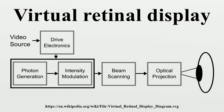A block diagram of the VRD is shown in the figure above. To create an image with the VRD a photon source is used to generate a coherent beam of light. The use of a coherent source allows the system to draw a diffraction-limited spot on the retina. The light beam is intensity modulated to match the intensity of the image being rendered. The modulation can be accomplished after the beam is generated, or if the source has enough modulation bandwidth, as in the case of a laser diode, the source can be modulated directly. The resulting modulated beam is then scanned to place each image point, or pixel, at the proper position on the retina. A variety of scan patterns are possible.